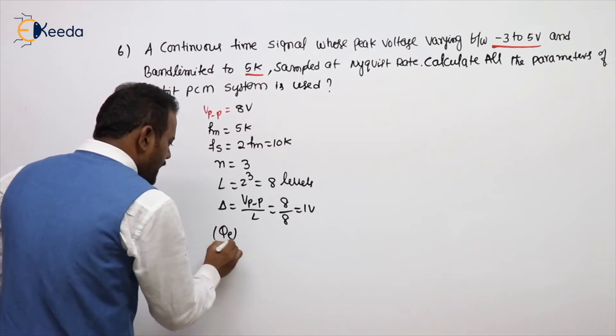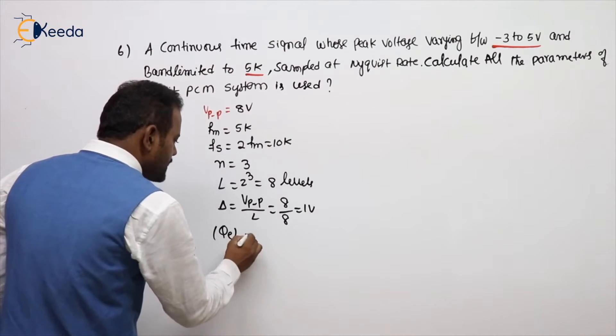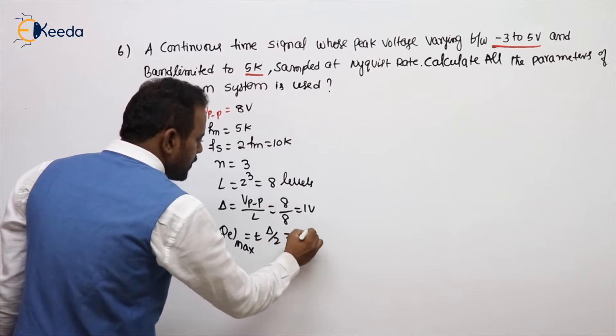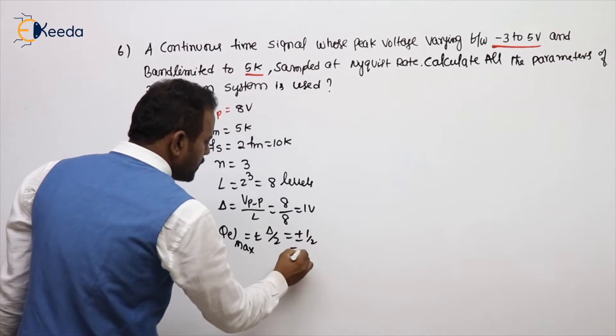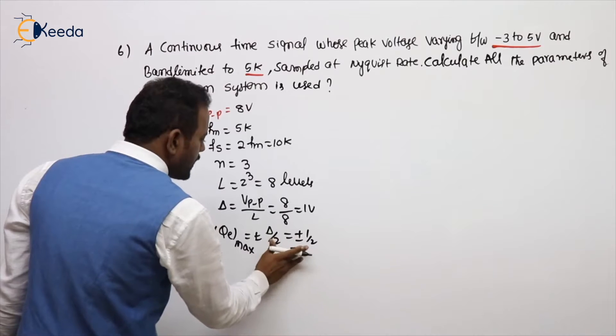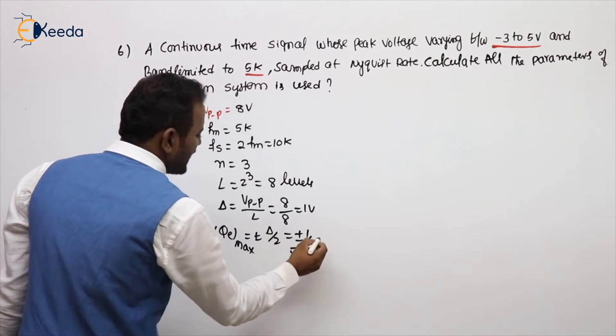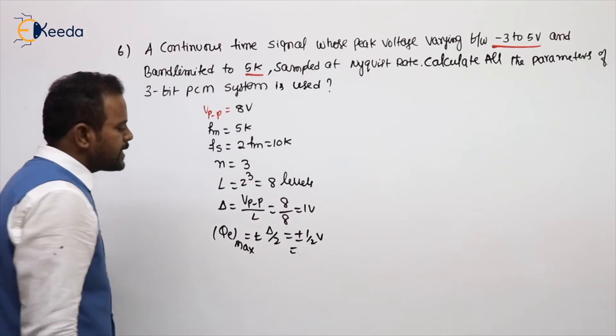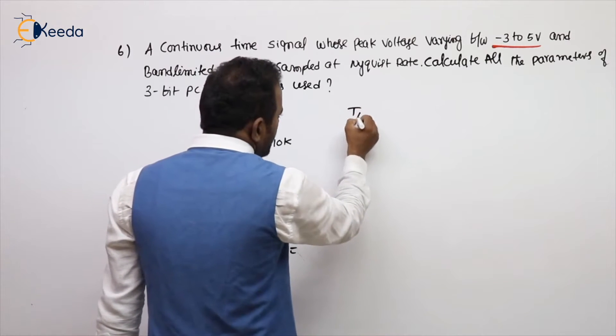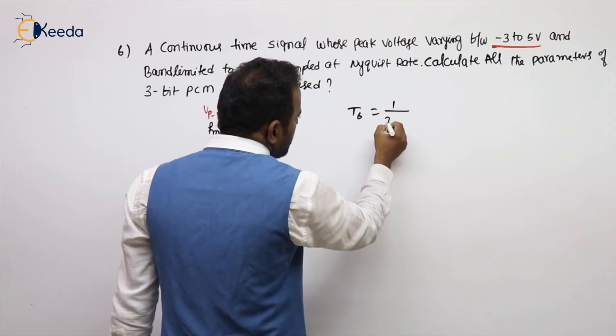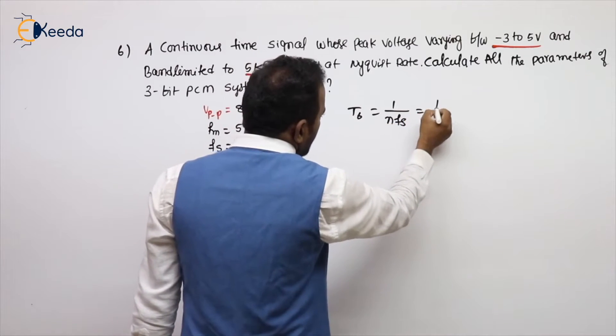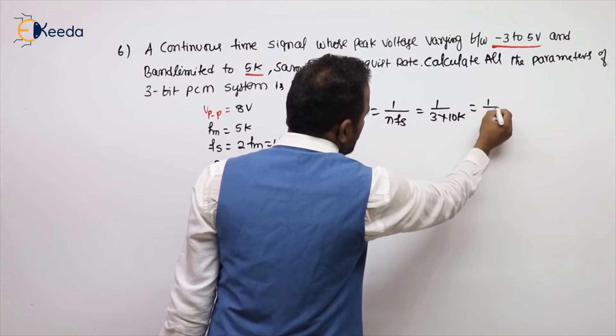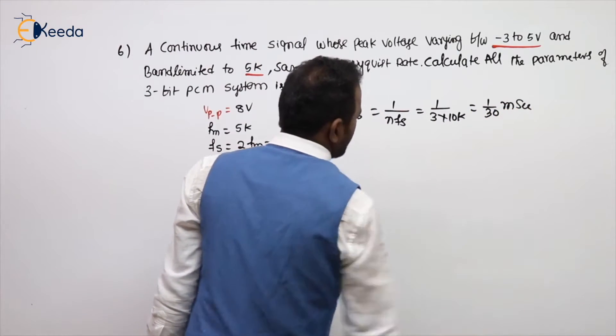Next, what is QE max sir? QE max is nothing but plus or minus delta by 2, plus or minus 1 by 2, so 0.5 volt. Next, what is TB sir? TB is nothing but 1 by NFS. N value is 3, FS value 10K, so 1 by 30 millisecond.